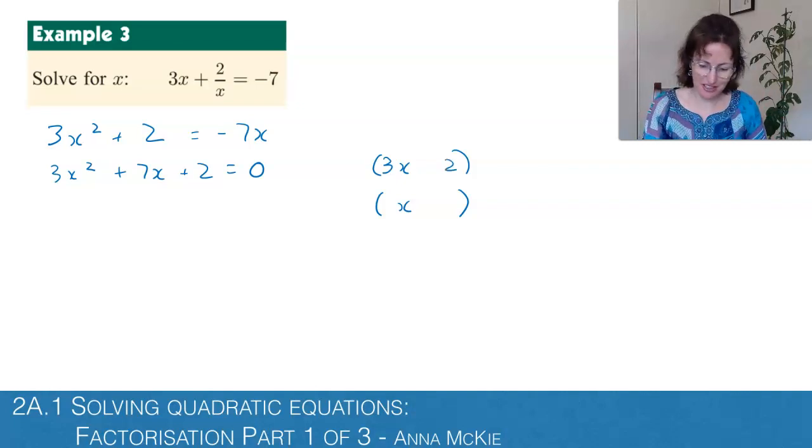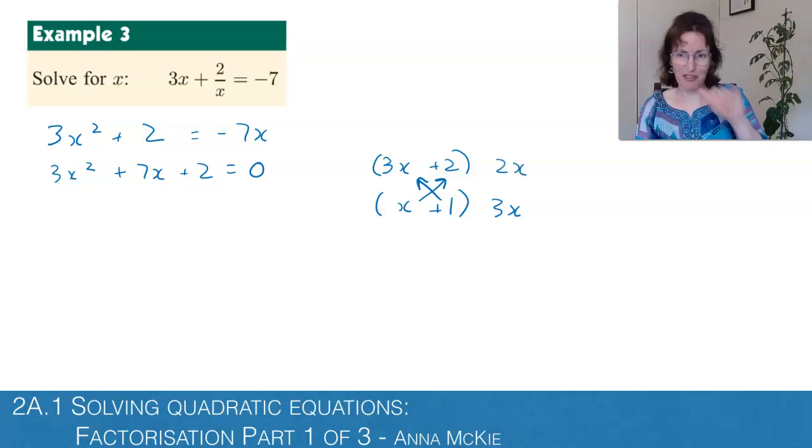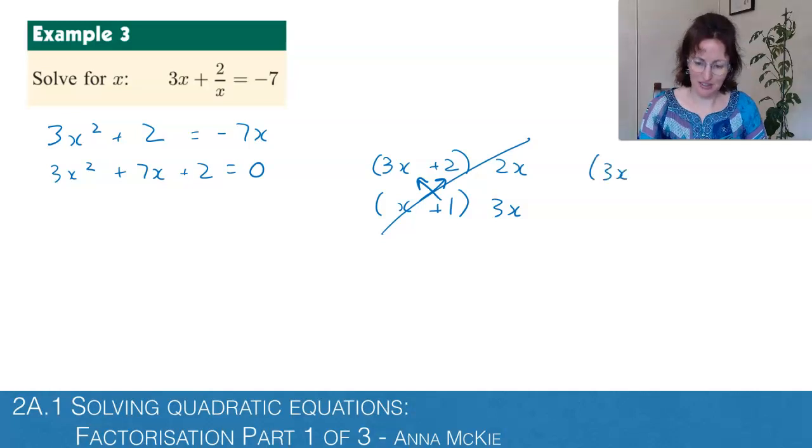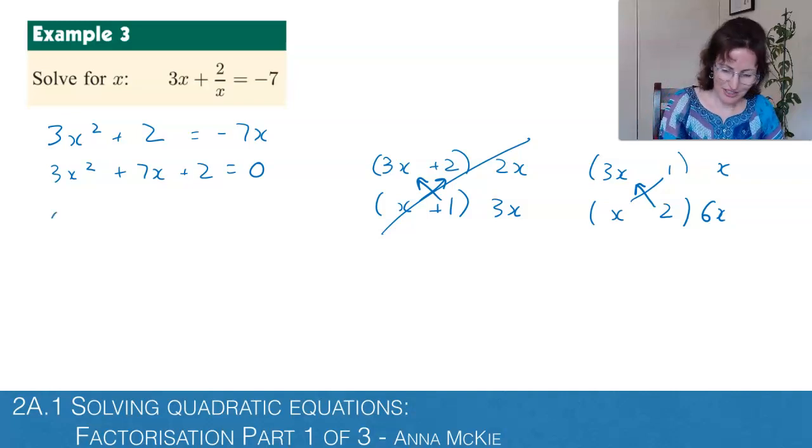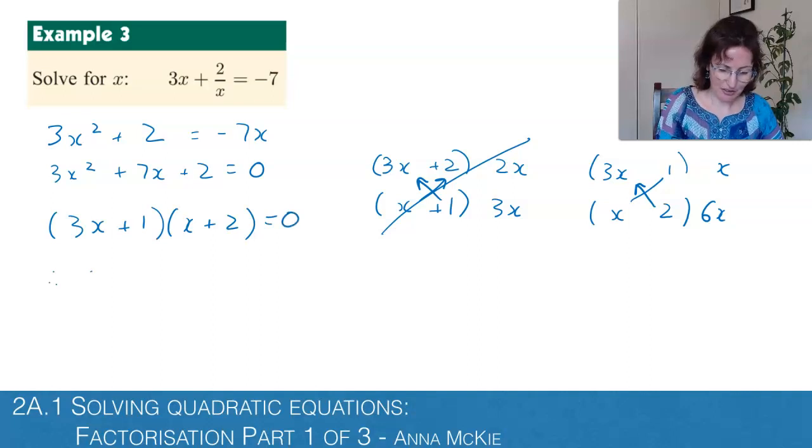I can already see that, well, I'll do the wrong one for you first. If it was positive 2 and 1, positive 1, and you cross multiply that, you would have 3x coming from there and 2x coming from the other multiplication. That's only 5x, so that one's not going to be right. I can already see that the 2 and the 1 need to go the other way around, so when you cross multiply, that gives you 6x and that gives you a single x. The 6x plus x gives you 7. So there are two brackets: 3x plus 1 and x plus 2 equals zero.